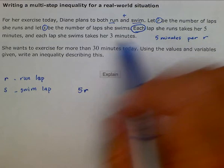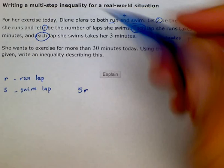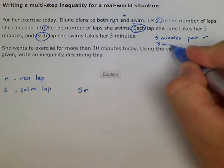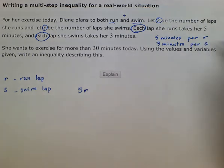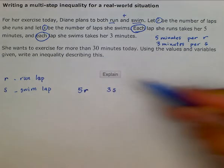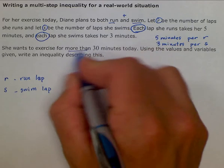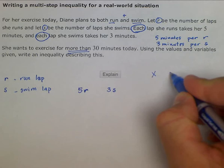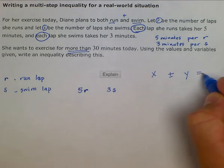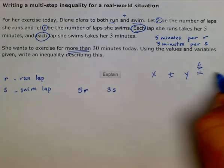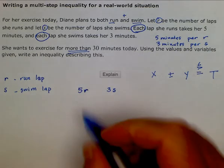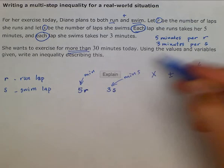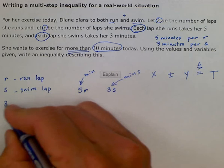And each lap she swims — here's the other key word, 'each,' which implies variability. Swimming takes three minutes, or three minutes per lap S. So we would have three minutes per lap. And she wants to exercise more than 30 minutes today. When setting up an equation or inequality from a word problem, you're going to have some variable plus or minus some variable, and that's going to equal or be greater than or less than some total, working in the same units. Here the units are five minutes and three minutes, and the total is 30 minutes.